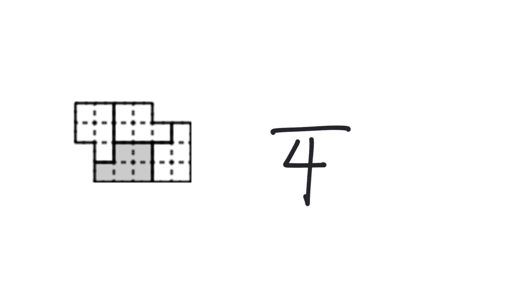The last example: if we want to identify what fraction is shown, I first count how many pieces it has been cut into — one, two, three, four pieces. Because it's been cut into four equal sized pieces, the denominator is four. I can see only one piece has been shaded in, so the numerator is one. The fraction is one-fourth.